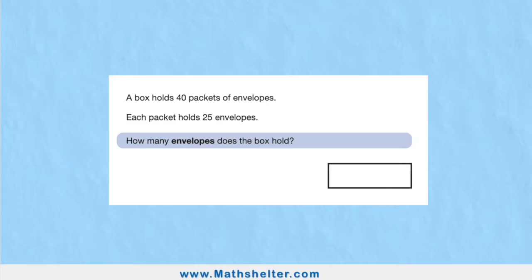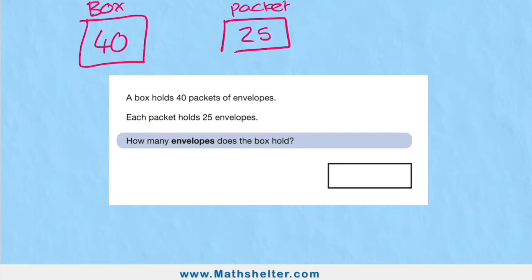Question 2 says a box holds 40 packets of envelopes. Each packet holds 25 envelopes. How many envelopes does the box hold? So we have a classic multiplication question here. So let's think of it. We have a box holds 40 packets of envelopes. And each packet holds 25 envelopes. How many does the box hold all together? So what I'm basically saying is I have a box with 40 packets. And in each packet I have 25 envelopes. So how many envelopes do I have all together? Well, I'm going to have to multiply my packets by how many I can fit in my box. So if I get 25 and I multiply it by my 40, I'm going to end up with how many envelopes I have.